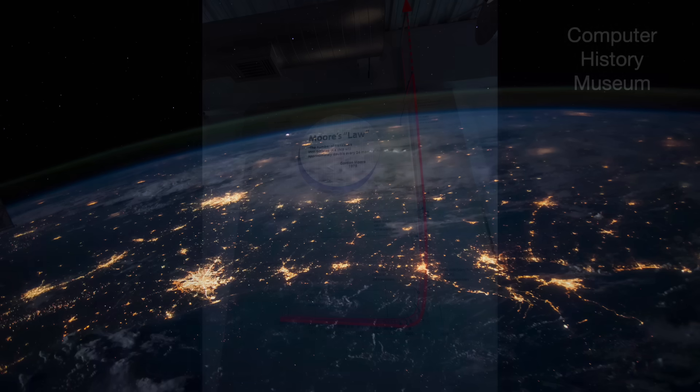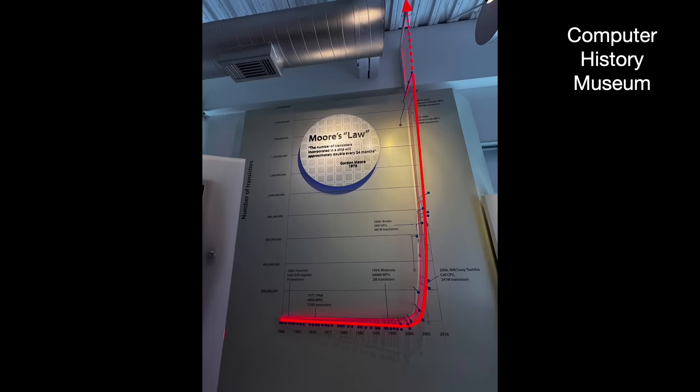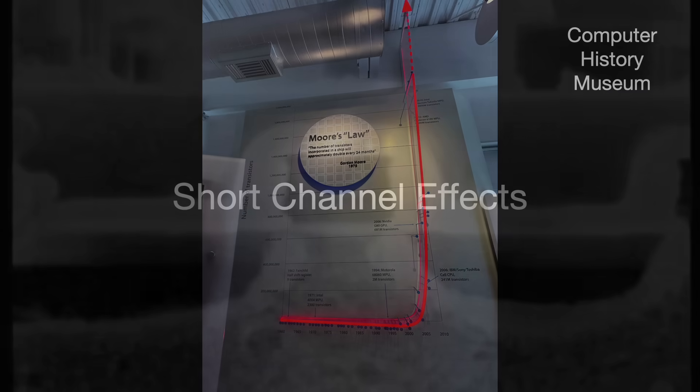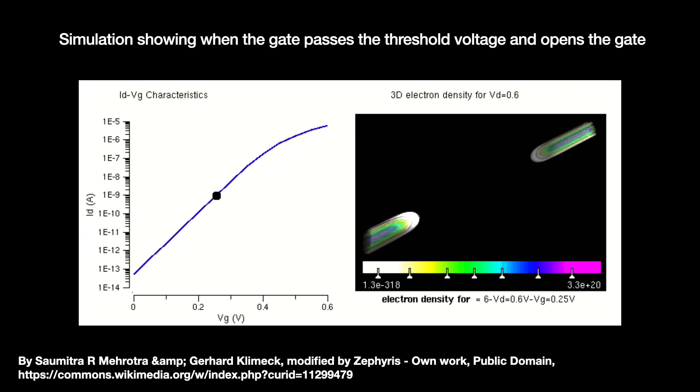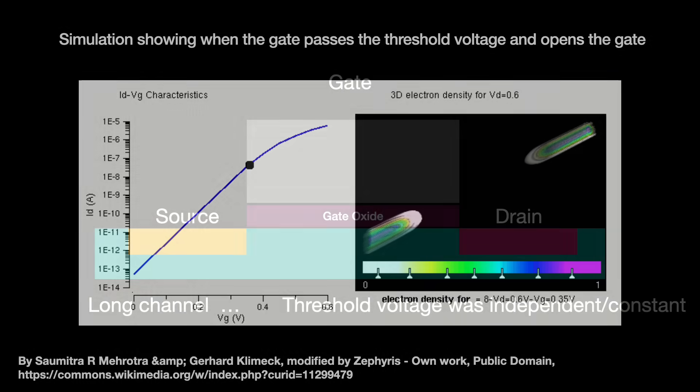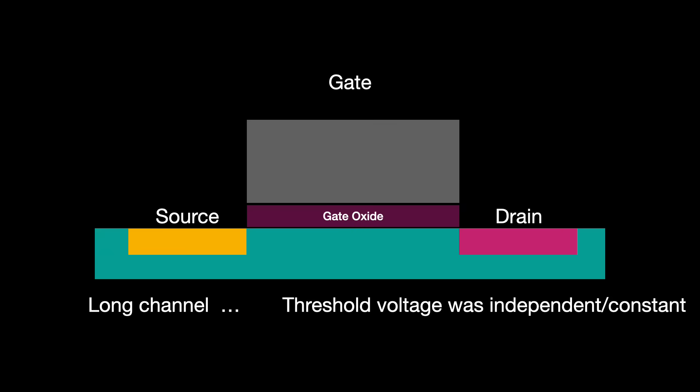After decades of shrinking the size of the original planar MOSFET, we started suffering a series of what we call short-channel effects. Short-channel effects come in two forms. First, threshold voltage. Well, the voltage at which the gate opens and creates the current between the source and the drain. When the channel was longer, the threshold voltage was constant and independent of any external factors. But when the channel got shorter,